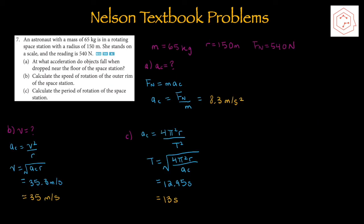Question 7: An astronaut with a mass of 65 kg is in a rotating space station with a radius of 150 m. She stands on a scale reading 540 N — so we know mass, radius, and normal force (the scale reading). Solving for centripetal acceleration from an external frame: fn = centripetal force, isolating for ac gives 8.3 m/s². Part B: speed of the outer rim — using ac = v²/r, isolating for speed gives 35 m/s. Part C: period of rotation — using ac = 4π²r/T², isolating for T gives 13 seconds.